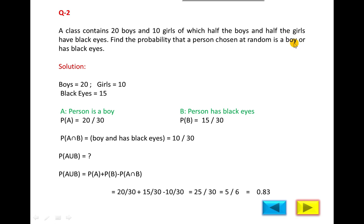So we will find the probability of A or B, boy or has black eyes. What is the probability of a boy? A is the boy. How many boys? 20 out of total 30. Probability of boys will be 20 upon 30. This is favorable outcome in the numerator, possible outcome in the denominator. Here we are using the classical approach, formula of probability.